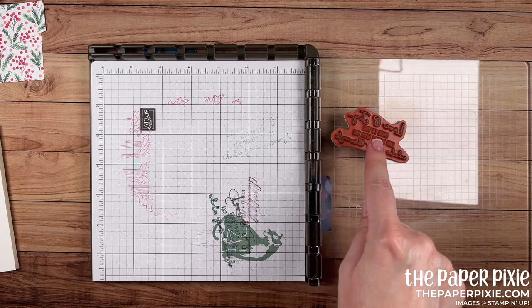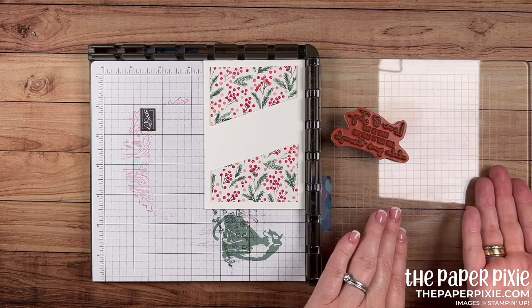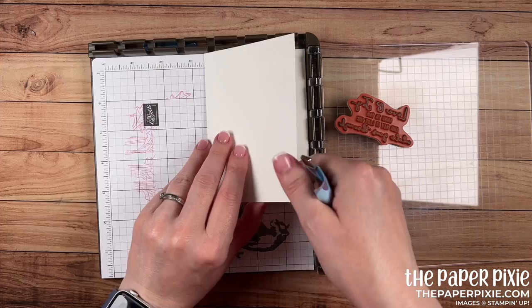Now whenever I'm making a set of cards I definitely want to have my stamparatus set up. So I have lined up the sentiment on an angle. I really just dry fit the card and placed down the designer series paper first and then lined up the stamp where I wanted it. Picked it up with the stamparatus and then if I had to tweak it a little bit I did that before finalizing its position.